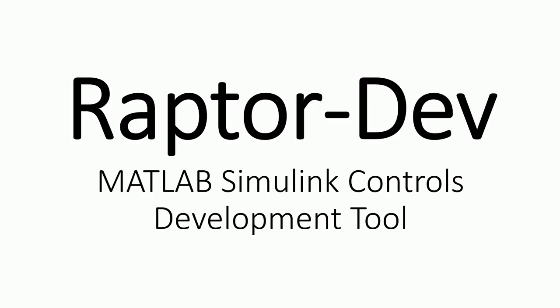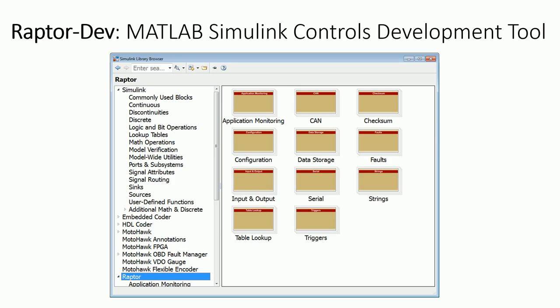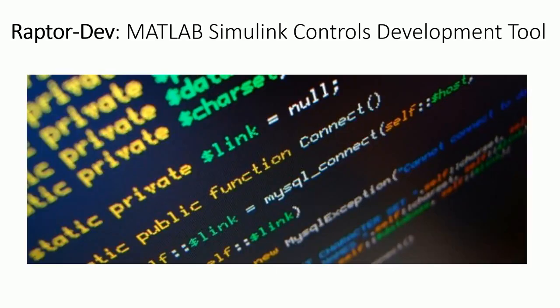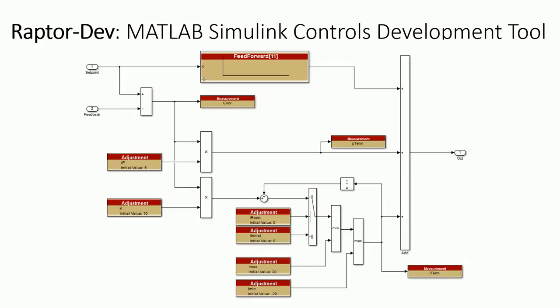Raptor Dev is a library of customizable Simulink blocks that allow developers to quickly create custom control software for Raptor-compatible control modules and displays. By writing code in Simulink, developers can avoid hand-coding complicated control logic, which in traditional programming languages like C, C++, or Java, can amount to hundreds of thousands of lines of code.